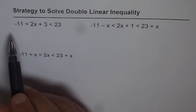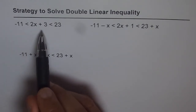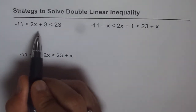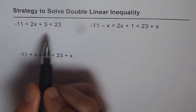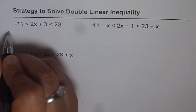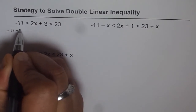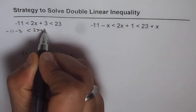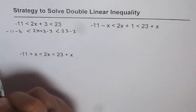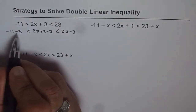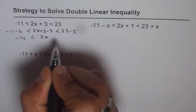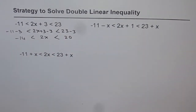The very first one is: minus 11 less than 2x plus 3 less than 23. In this case you can take away 3 from all three sides to get rid of 3 from the center. So what we get is minus 11 minus 3 is less than 2x plus 3 minus 3, which is less than 23 minus 3. After solving, minus 11 minus 3 is minus 14, which is less than 2x, which is less than 20.